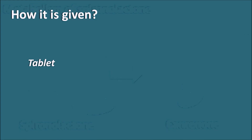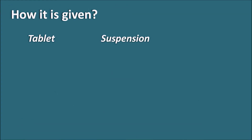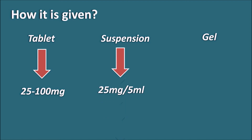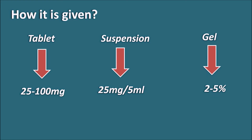Spironolactone can be given as a tablet, suspension, or gel. As a tablet, the dose ranges from 25 to 100 mg depending on the clinical use. As a suspension, it is supplied as 25 mg per 5 ml. The gel is available at a concentration of 2 to 5 percent spironolactone.